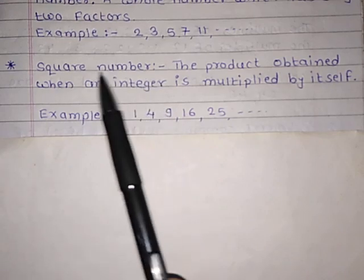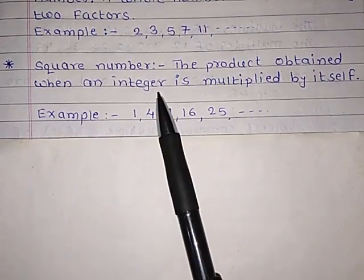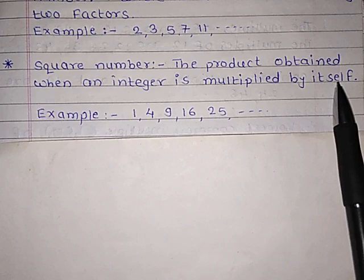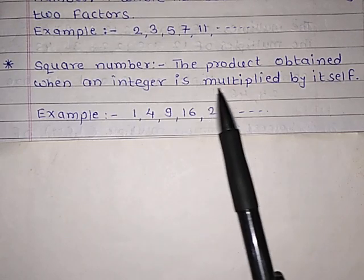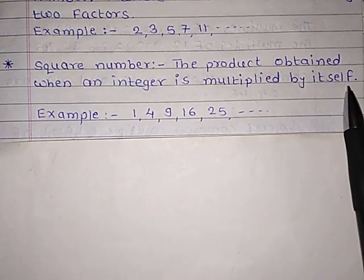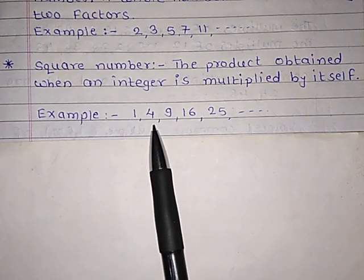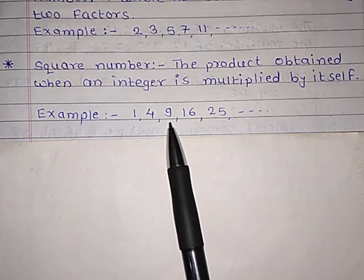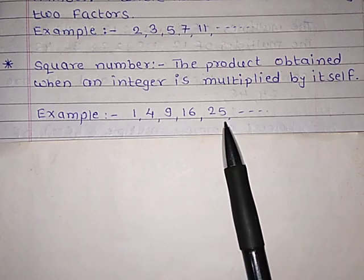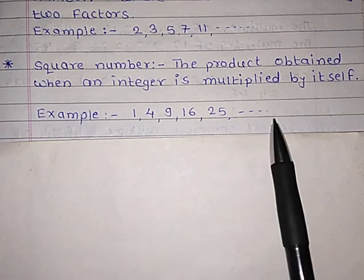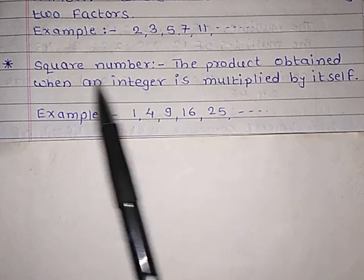Next: square numbers. The product obtained when an integer is multiplied by itself. For example, 2 multiplied by 2 equals 4; 3 multiplied by 3 equals 9; 4 multiplied by 4 equals 16; 5 multiplied by 5 equals 25, and so on. Such types of numbers are called square numbers.